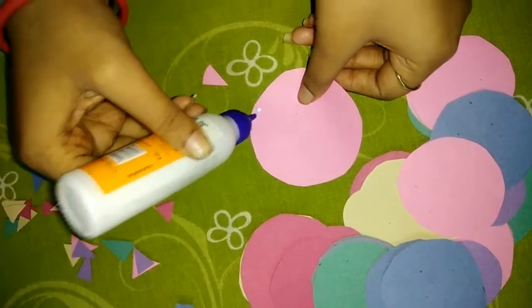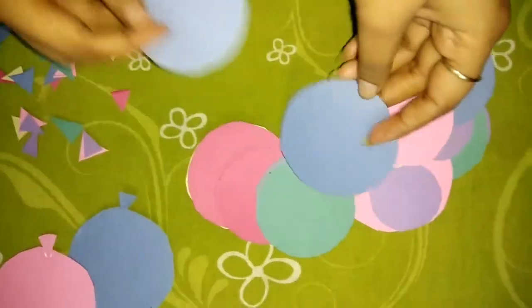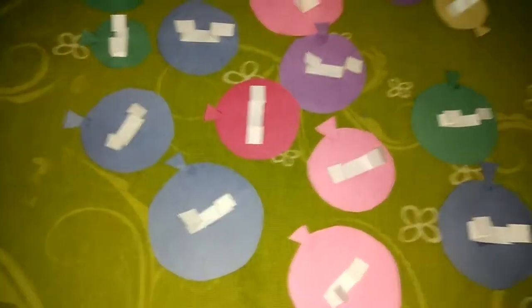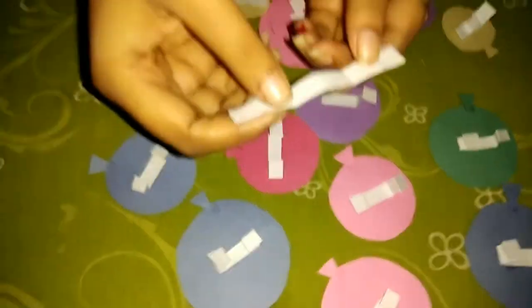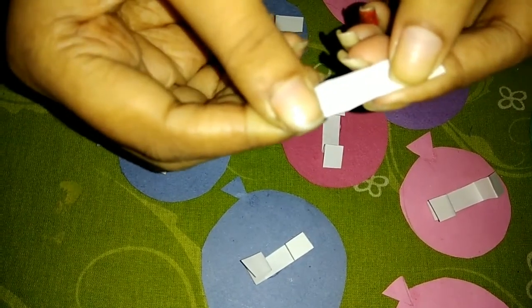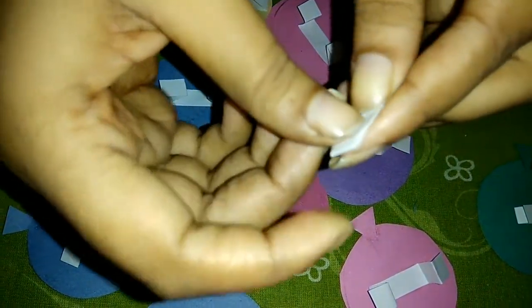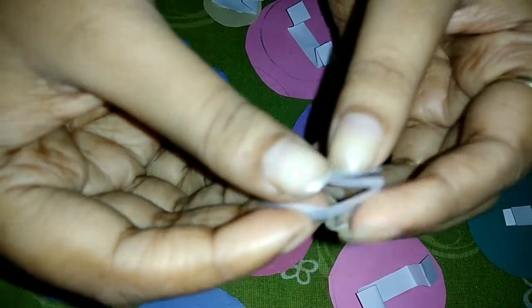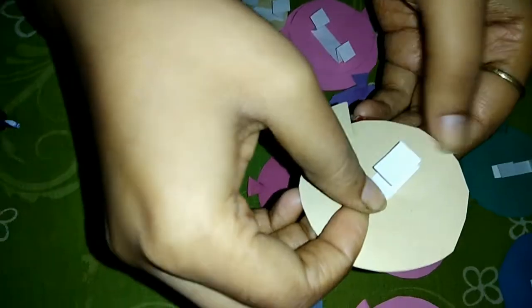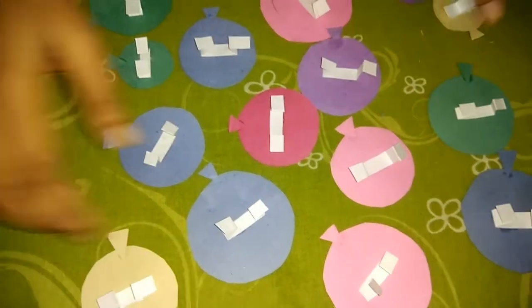We will attach the triangles to create the pop-up effect. I have prepared strips of white paper—I've taken 4cm pieces, folded them in half, then folded both sides inward to create an accordion fold. Then attach this pop-up mechanism to each balloon. I have done this to all of them.